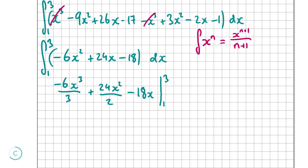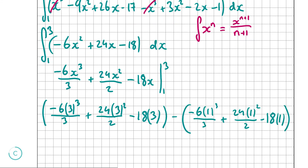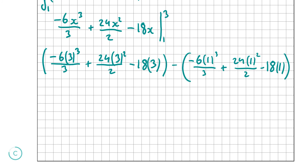Substituting x = 3: -6(3³)/3 + 24(3²)/2 - 18(3) = -54 + 108 - 54. Then substituting x = 1: -6(1³)/3 + 24(1²)/2 - 18(1) = -2 + 12 - 18.